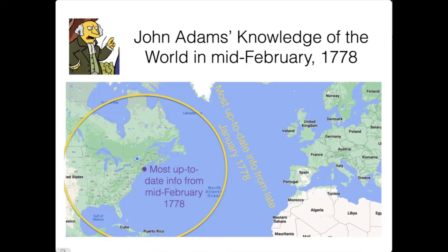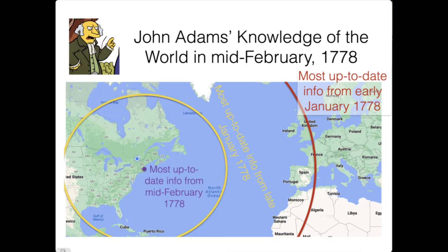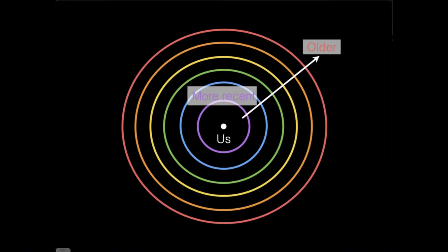So his information from far away is more out of date. Going even further: any information he had from Paris in mid-February 1778 would have had to have left Paris in early January 1778. So a map of John Adams's universe would have had an even older picture of Paris. And so very naturally, because it took time for letters to reach John Adams—just as it takes time for light to get to us from the distant regions of the universe—we end up with maps of our universe that are very old far out, and very young close by.